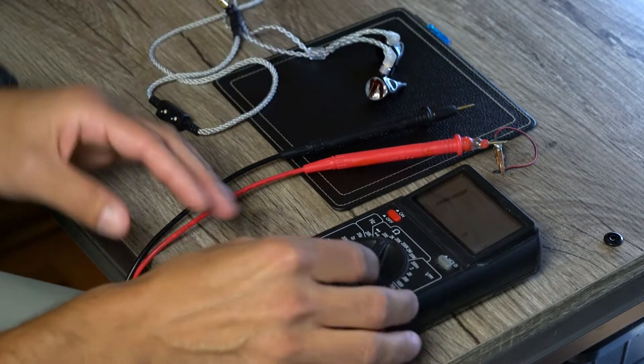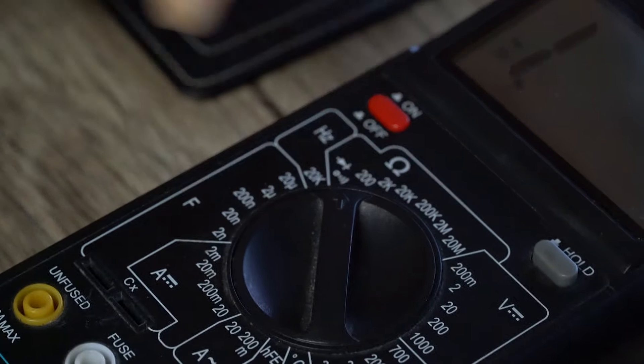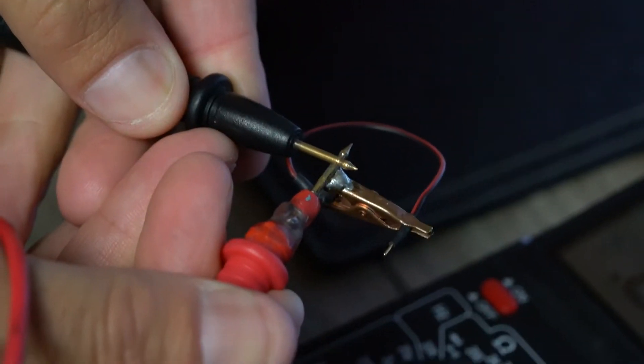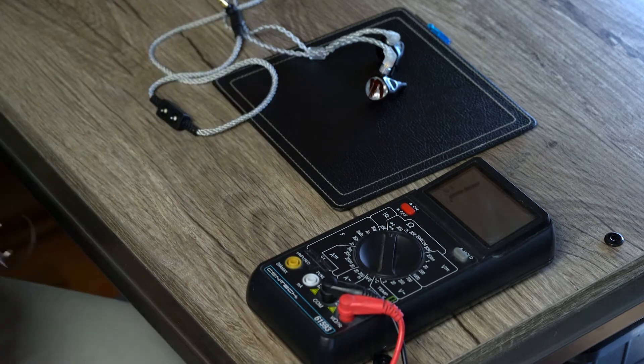You want to get to your multimeter and put it on the continuity position. Take your two probes, set them against each other. You got noise, you got connectivity, you're all good.